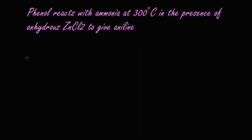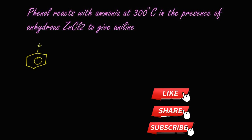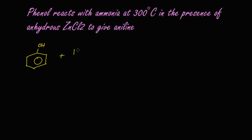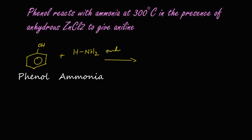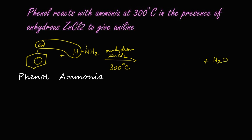Now let's learn the other reaction. Phenol — where an OH group is attached to the benzene ring — reacts with ammonia (NH₃). The reaction takes place in the presence of anhydrous zinc chloride at a temperature of 300°C. Dehydration takes place: the OH from phenol and the hydrogen from ammonia leave as a water molecule (H₂O).